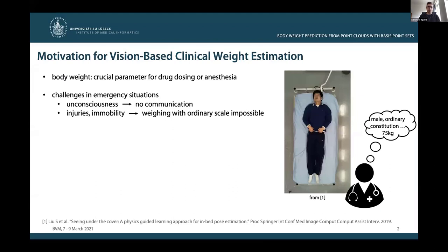The body weight of a patient is a very important parameter in many clinical settings. For instance, it needs to be known to determine the proper drug dosage or anesthesia. However, in emergency situations, a straightforward assessment of the patient's weight is not always possible. Patients might be unconscious such that they cannot communicate their weight, and injuries or mobility issues might prevent the usage of an ordinary scale.